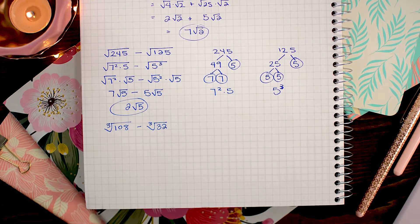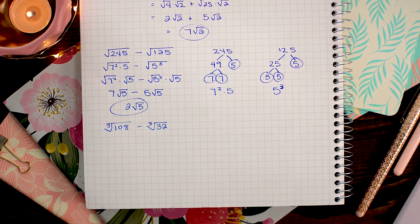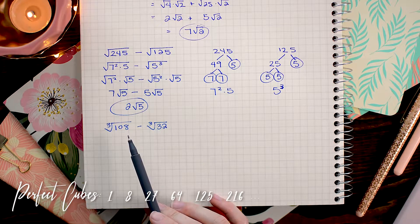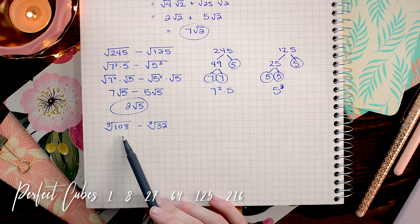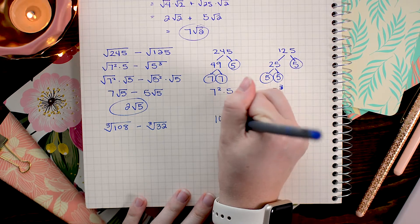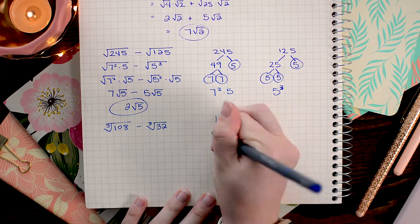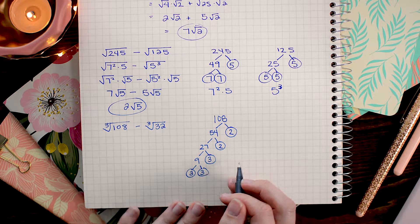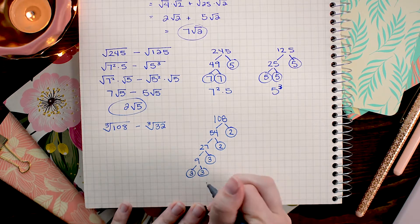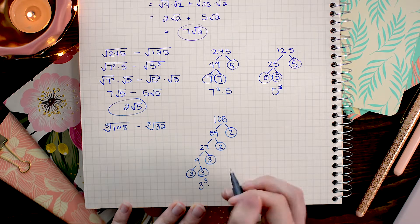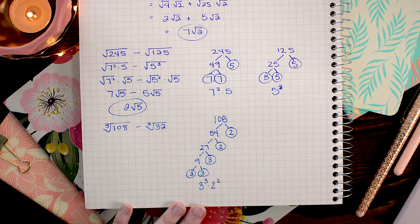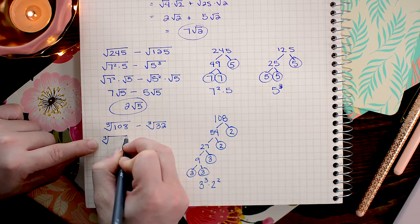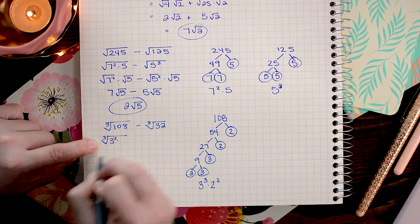Now that we're working with cube roots, we want to find perfect cube factors. Again, I'm not really seeing right away what the cube root factor of 108 might be. So for that one, I'm going to go ahead and make a factor tree just like we did before. So our prime factorization for 108 is 3 cubed and 2 squared. Much easier numbers to work with. I'm going to go over here and replace 108 with those numbers.